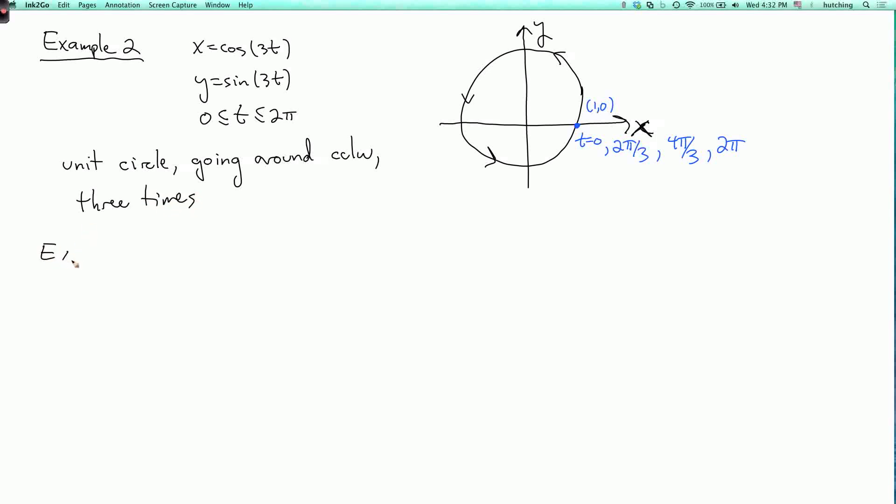Example 3 will be x equals cosine of minus t, y equals sine of minus t, and t goes from 0 to 2 pi. And of course cosine of minus t is the same as cosine of t, and sine of minus t is the same as minus sine t. So once again, every point on this curve is on the unit circle. But now because of this minus sign, what that means is we're going around backwards, or clockwise.